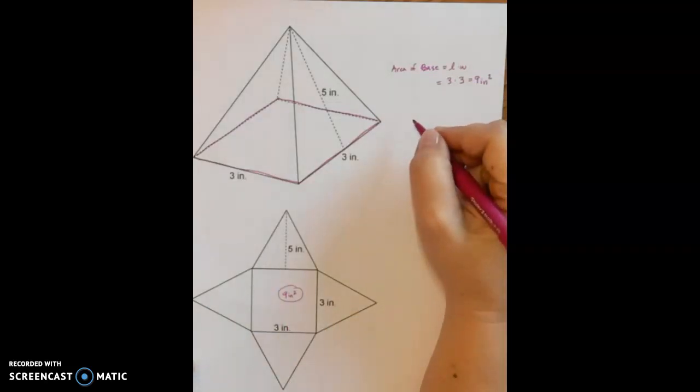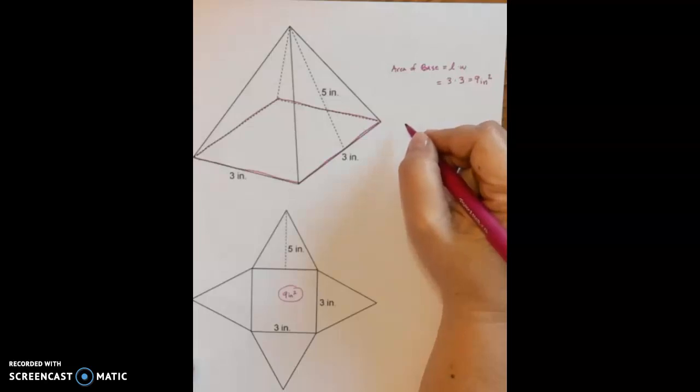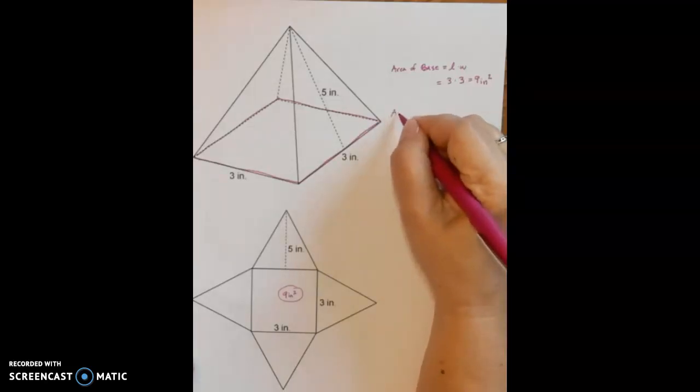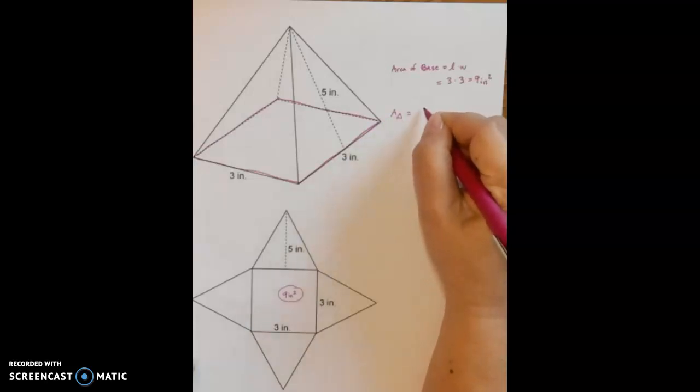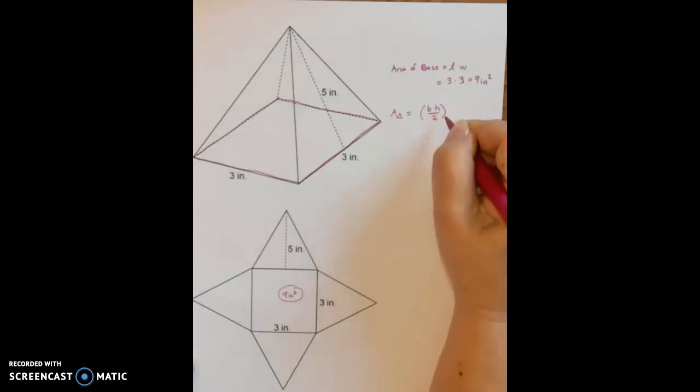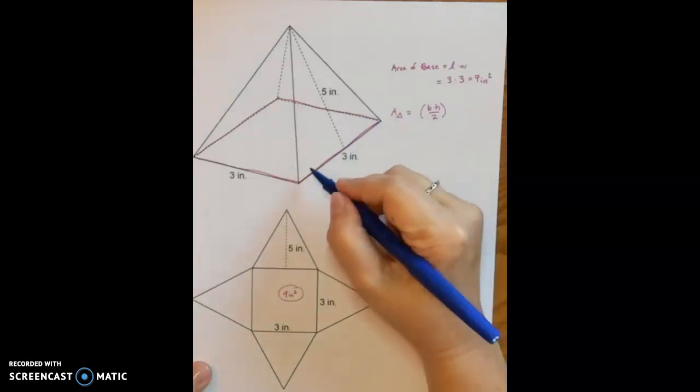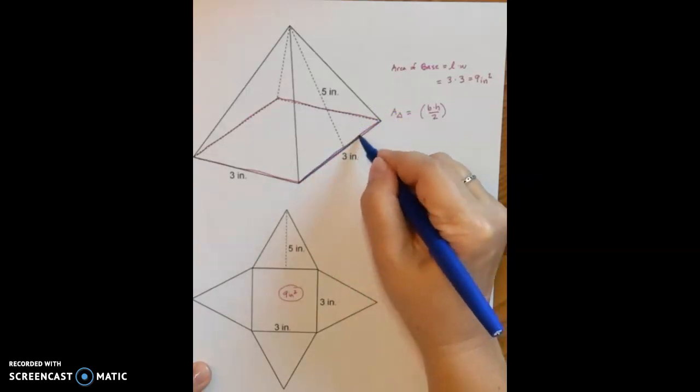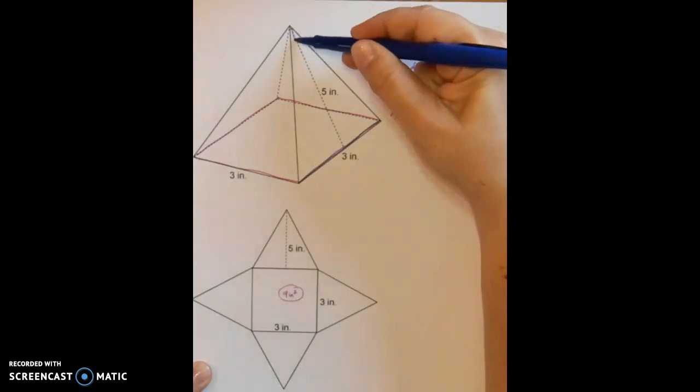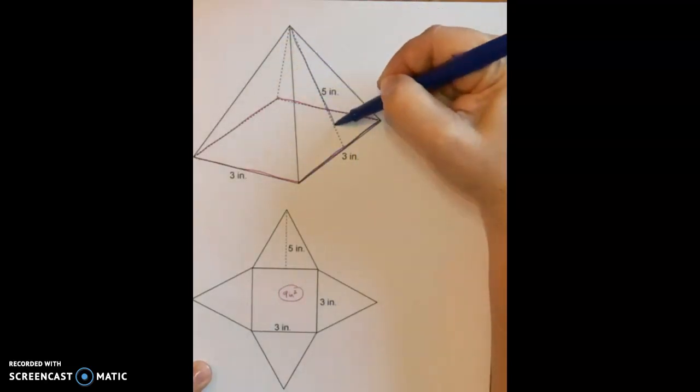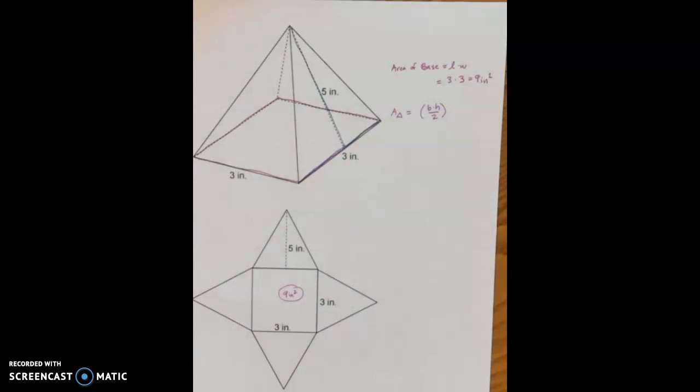Now if I'm looking at my net, that tells me that the area of the base is 9 square inches. Now I have four triangular sides and all four of those sides are going to be the same size as each other since my base is a square. In order to find the area of a triangle we need to remember our formula which is base times height divided by 2. Now base and height of a triangle are always the two dimensions that when they get together and actually intersect, they form a right angle. So that's going to be 3 inches and 5 inches. That's our base and height of our triangle.